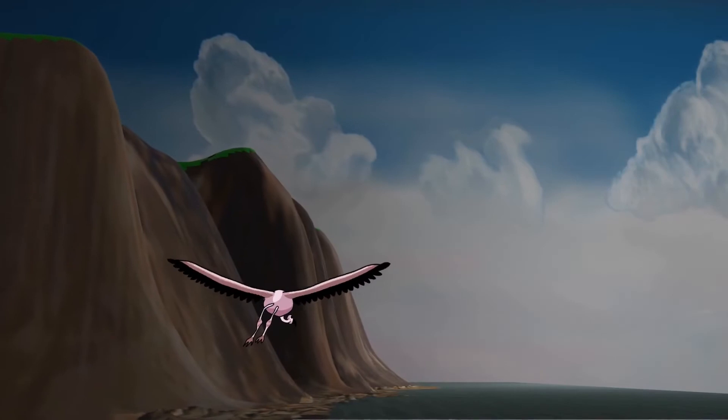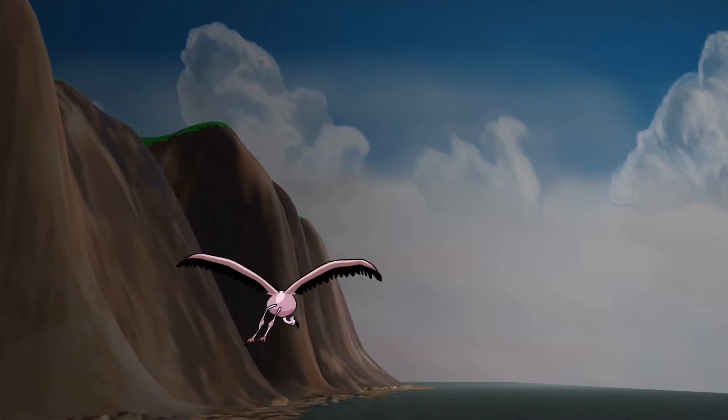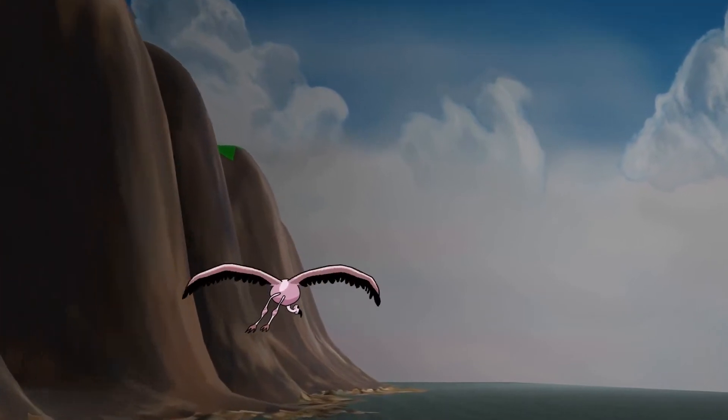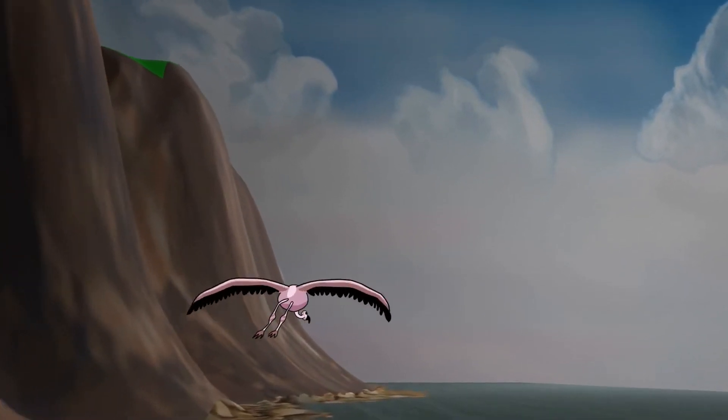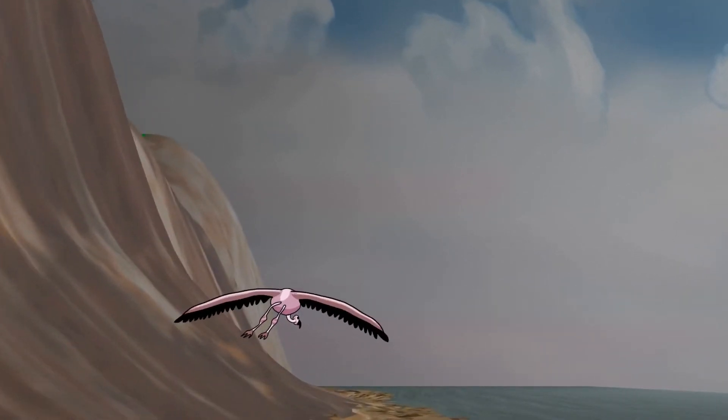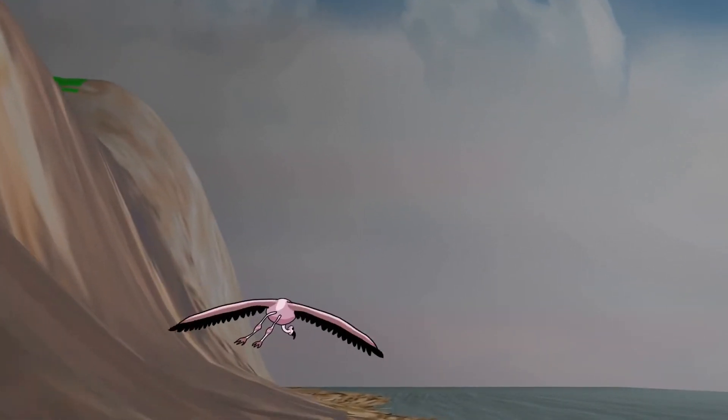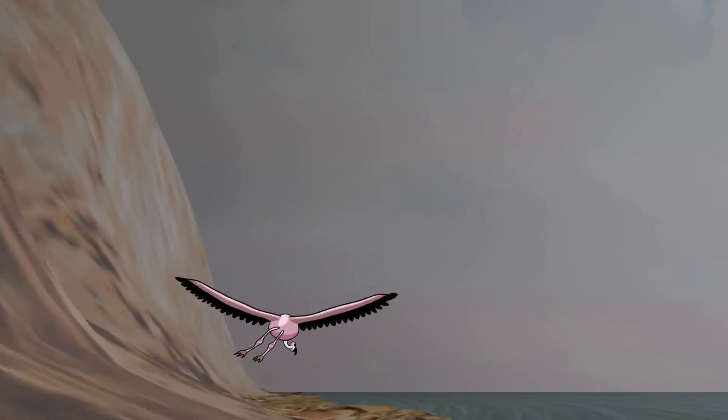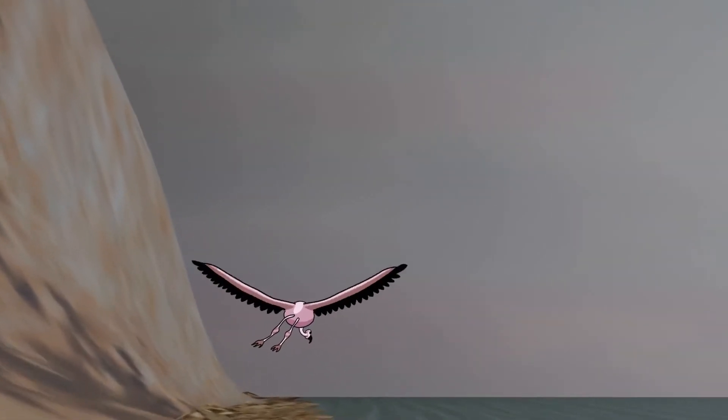So the first part of this movie that I'm currently working on that I'm using 3D for is this fly-through scene here. It's basically going to be a scene of flamingos flying down a river valley along some cliffs on the left, and there'll be a river below them and sand banks to the right.